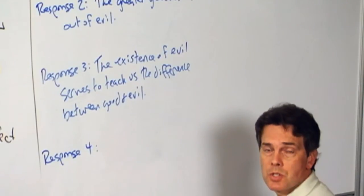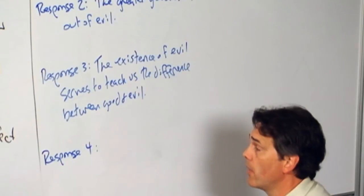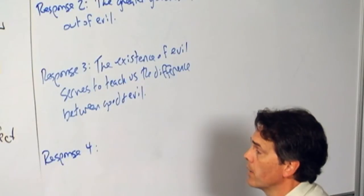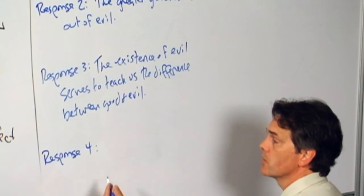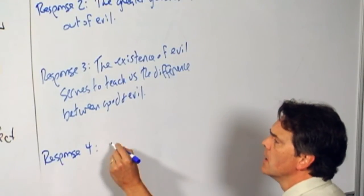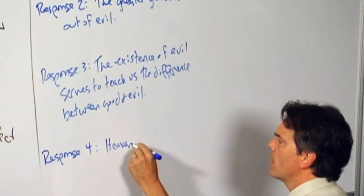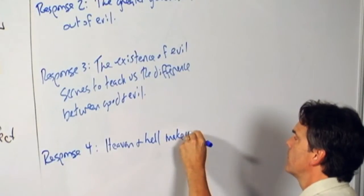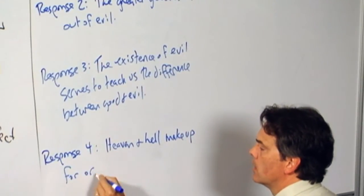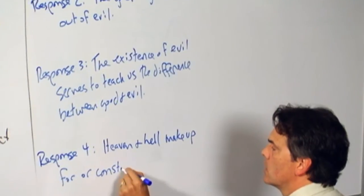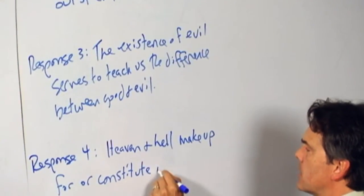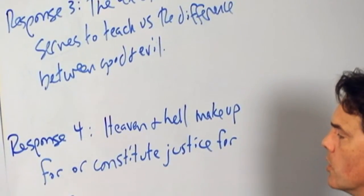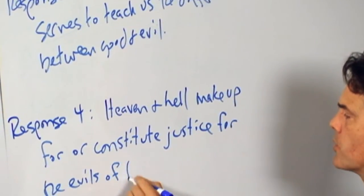And that there is an ultimate justice for those who commit evils in that those individuals then go to hell and they have to pay for their crimes in the suffering they experience there. So I will just make this point here that heaven and hell make up for or constitute justice for the evils of this world.